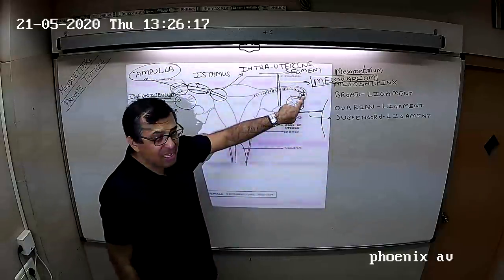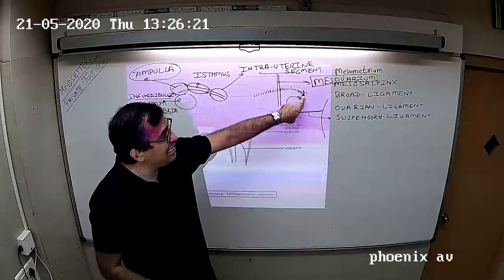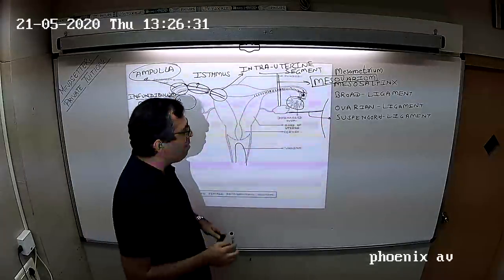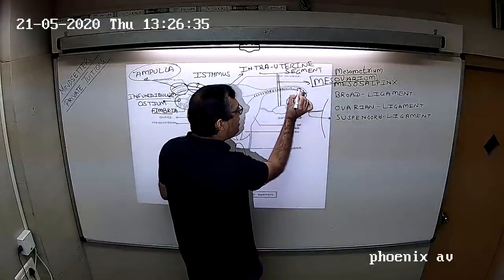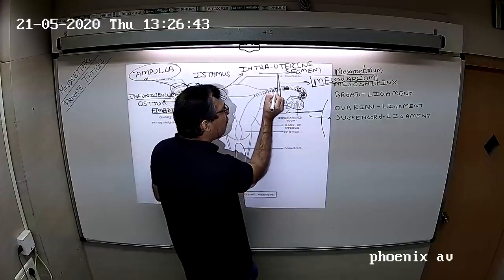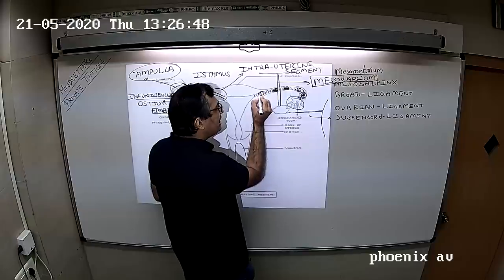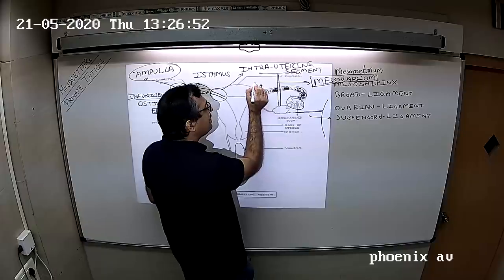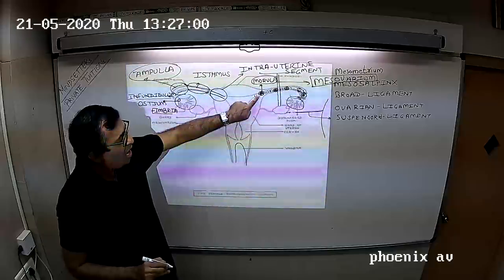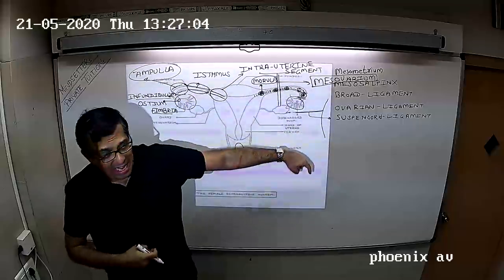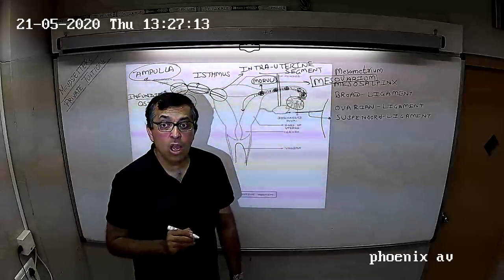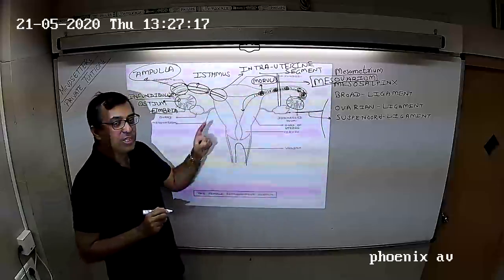Fertilization takes place in the ampulla. The zygote formed will start moving with the help of cilia. The zygote, one cell, will divide to form two cells, two cells to four, four to eight, and eight cells will form a sixteen-cell structure called as the morula. The morula passes into the uterus and drops inside the uterus.